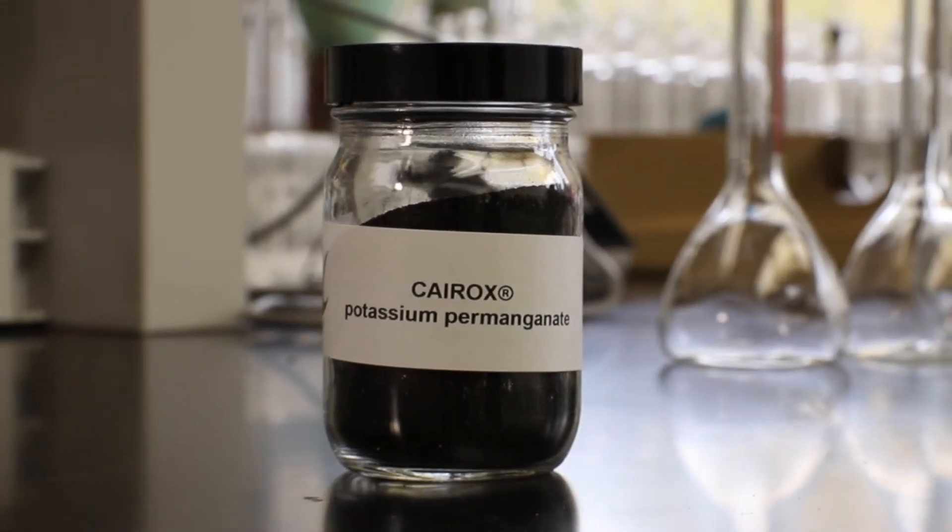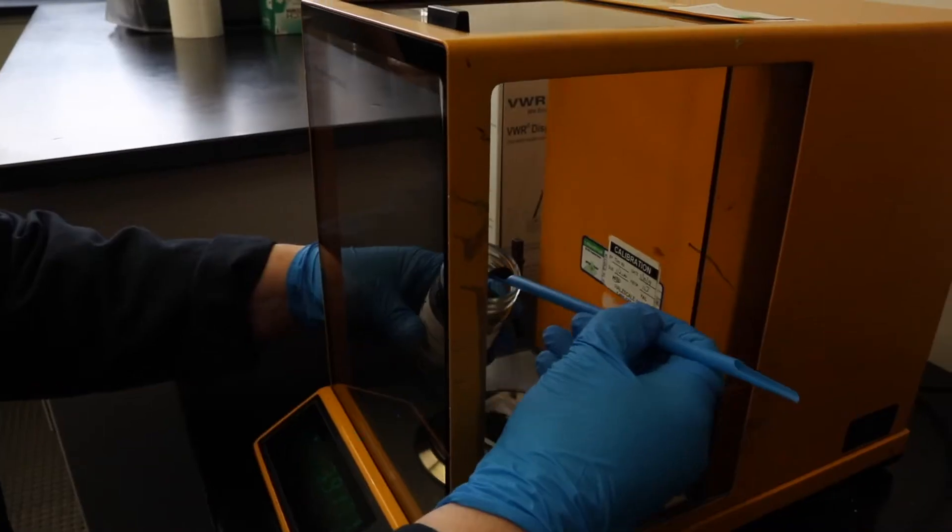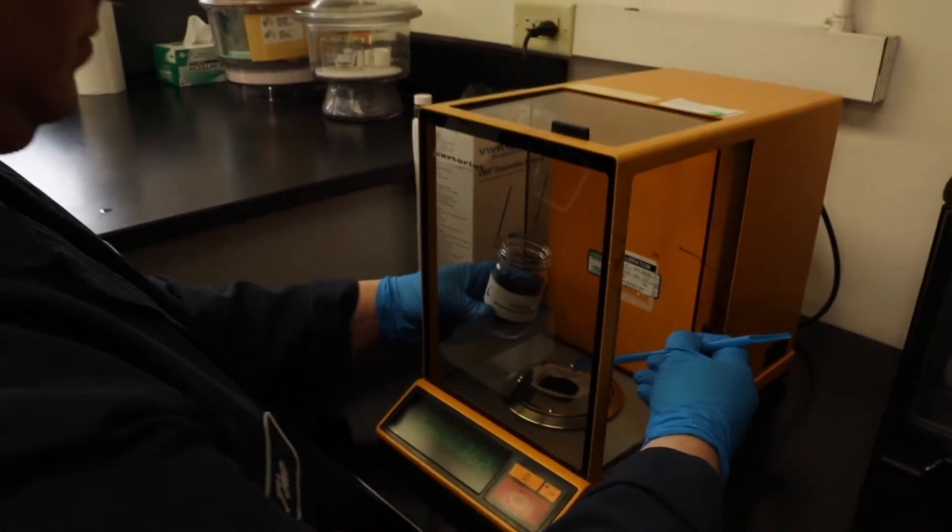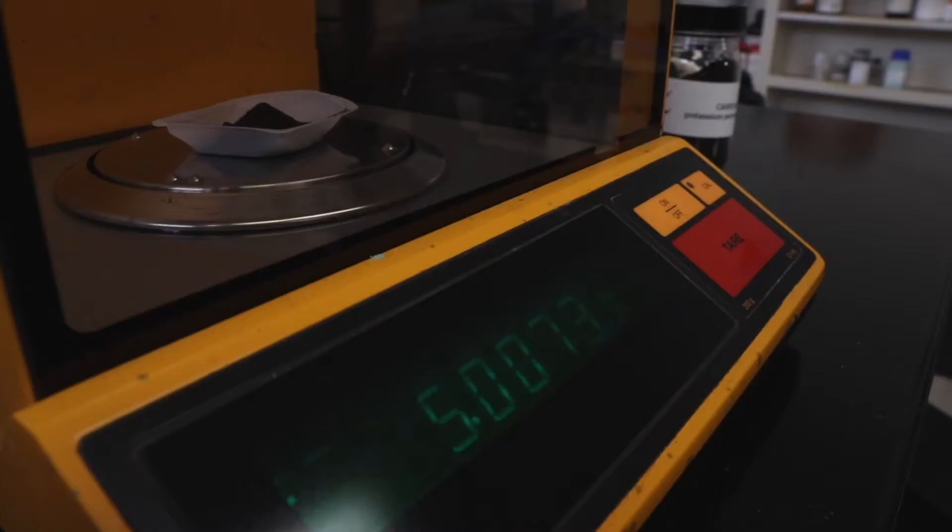This method will cover making a stock solution with Cairox potassium permanganate. Place 5 grams of Cairox potassium permanganate into a 500 milliliter volumetric flask.